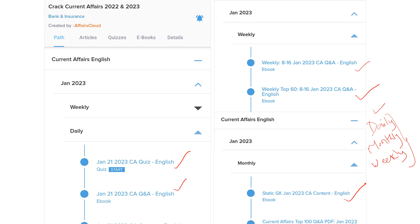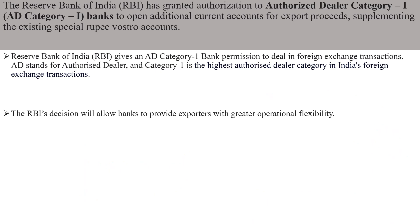Now we are going to see banking and finance-related current affairs. First, it is about RBI news. RBI has given authorization to Authorized Dealer Category 1 banks to open an additional current account. They are already having a current account, but now RBI has permitted them to open another current account for export proceeds.